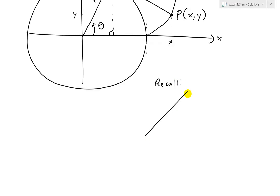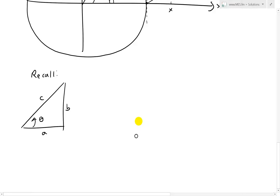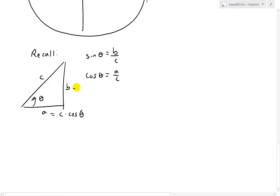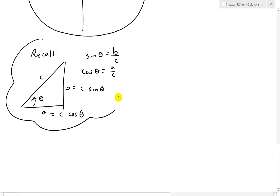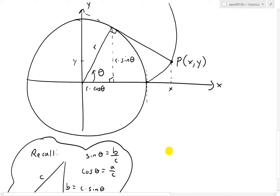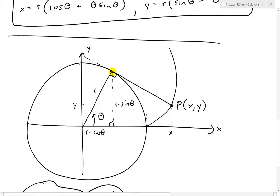Recall for a triangle with angle theta and sides A, B, C: sine theta by definition is opposite over hypotenuse, B over C; and cosine is adjacent over hypotenuse, A over C. Rearranging: A equals C times cosine theta, and B equals C times sine theta. So for our first triangle, the hypotenuse is R, giving us R cosine theta as the horizontal component and R sine theta as the vertical component. So we have the vertical and horizontal components up to this point.